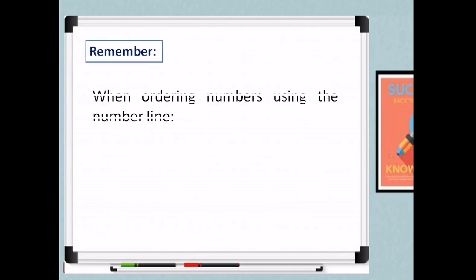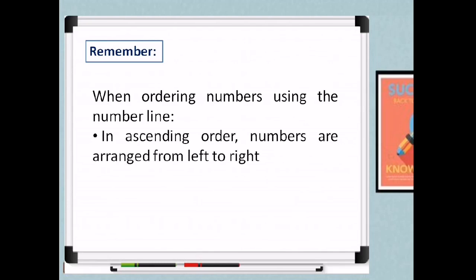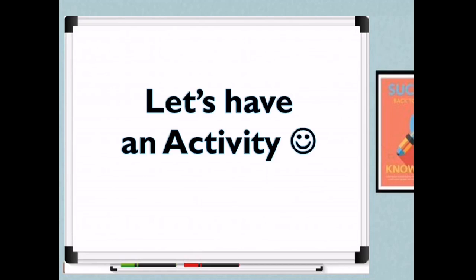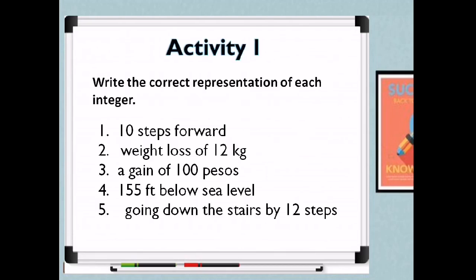I hope you're following along with our lesson. Remember: when ordering numbers using the number line, in ascending order numbers are arranged from left to right, and in descending order numbers are arranged from right to left. Please get your pen and paper because you will be having your activity for today. Remember the value of honesty and integrity. You have 3 sets of activities to answer, and the answers will be revealed in this video so you can check your own work. Have fun answering, and good luck!